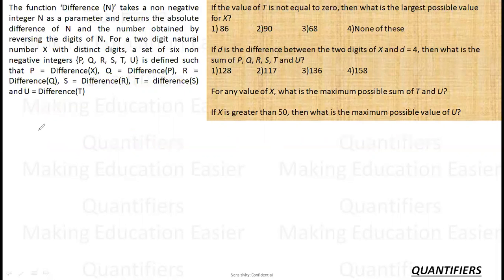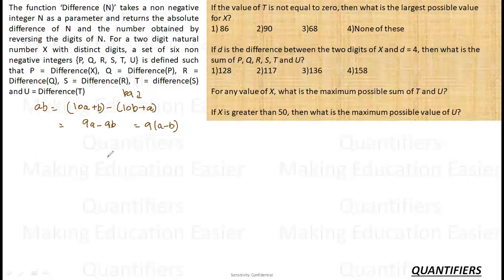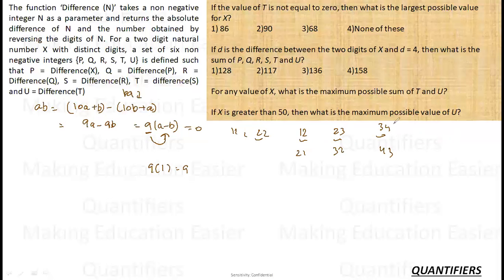For any two-digit number AB, in expanded form it is 10a + b, and its reverse is 10b + a. Their difference is 9a minus 9b, which equals 9 times (a minus b). So the difference is always a multiple of 9, depending on the difference between the digits. If the digit difference is 0, the outcome is 0. If the digit difference is 1, the outcome is 9 — for example 21 minus 12 = 9, 32 minus 23 = 9. If the digit difference is 2, the outcome is 18, and so on.